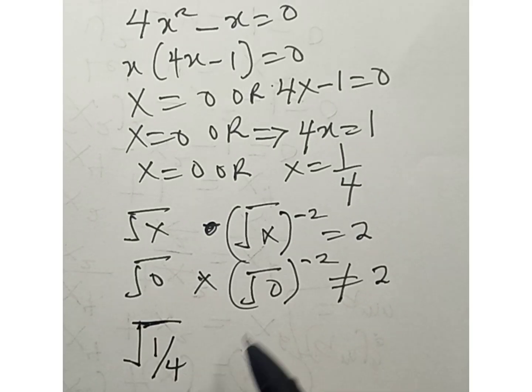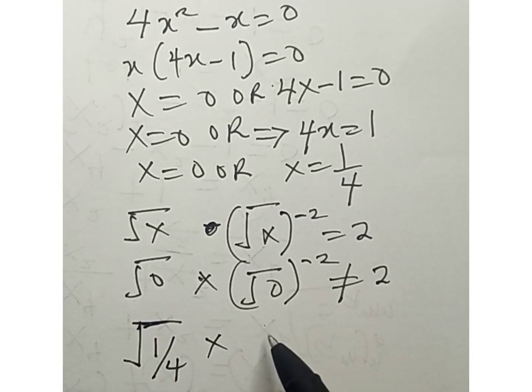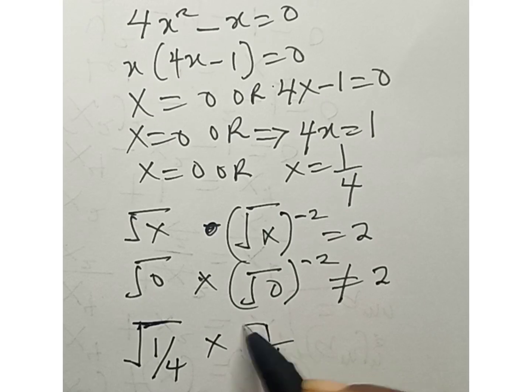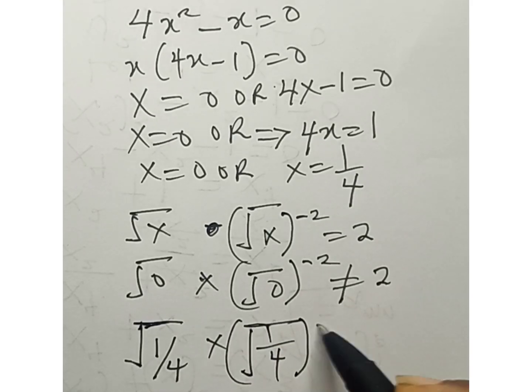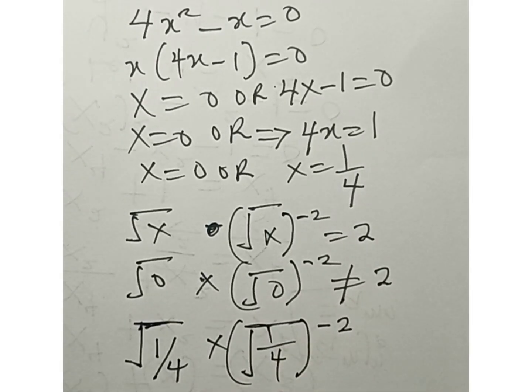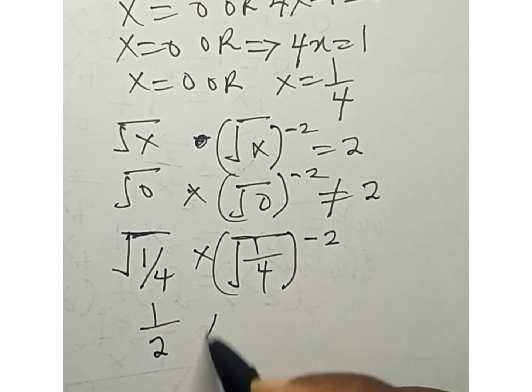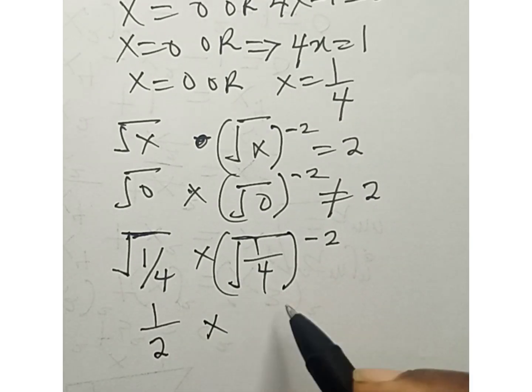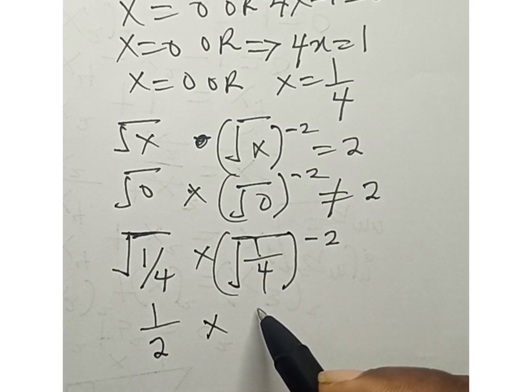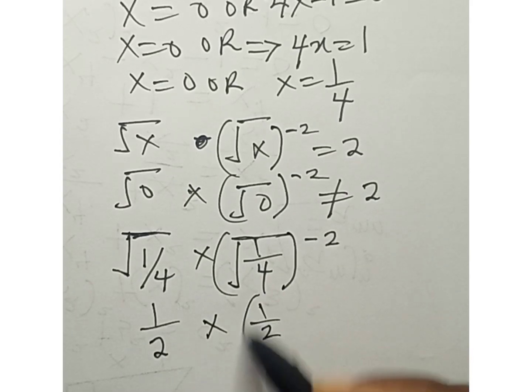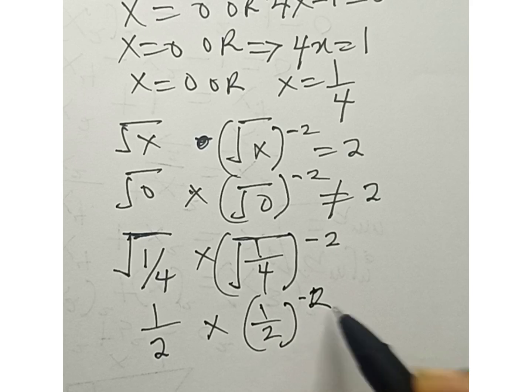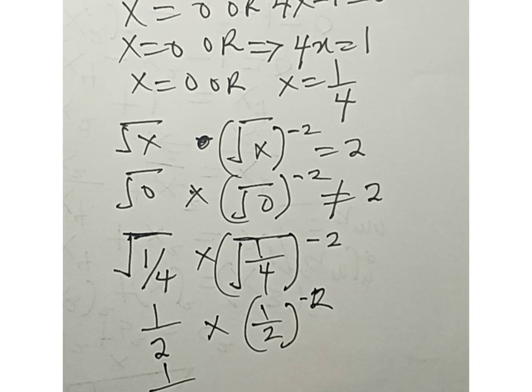4 times √(1/4) · (√(1/4))^(-2). Let's see: √(1/4) is 1/2 times... what do we have there? 1/4 here, we still have 1/2 raised to the power minus 2. So we're going to have 1/2